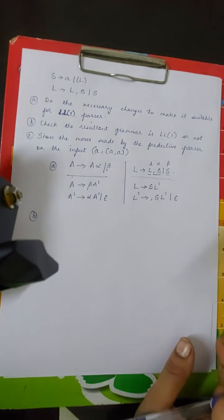Let us write the FIRST sets. FIRST of S: from one production it is A, and from the other production it is opening parenthesis — so FIRST(S) is {A, opening parenthesis}. FIRST of L: it starts with S, so FIRST(L) equals FIRST(S) which is {A, opening parenthesis}. FIRST of L-dash: it has comma and epsilon.